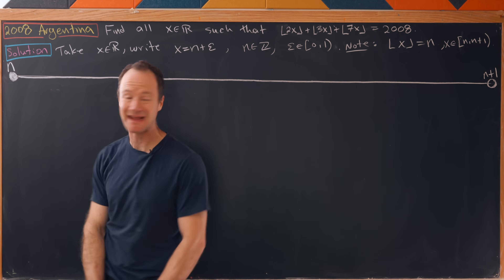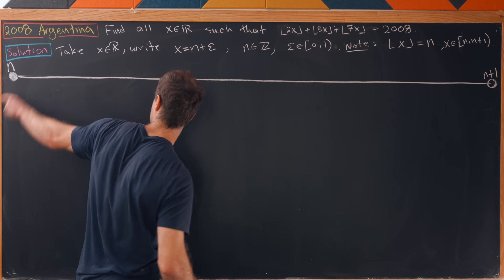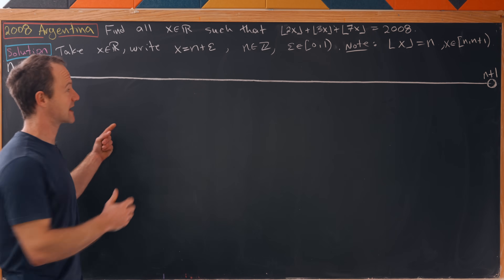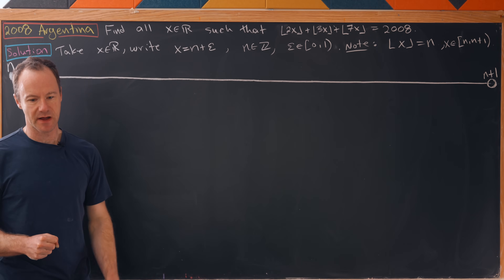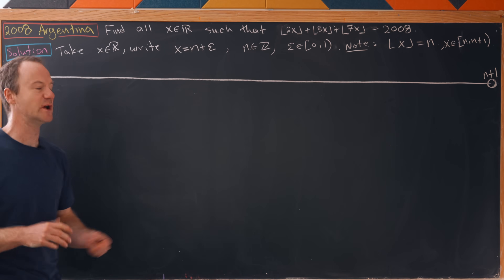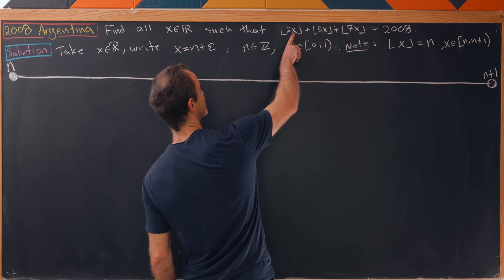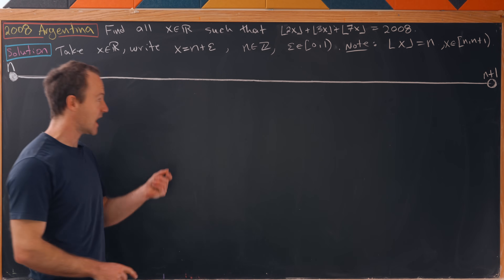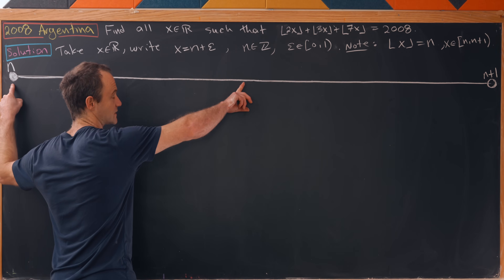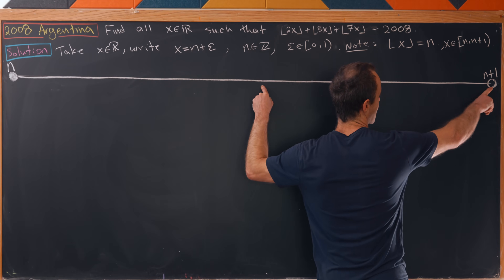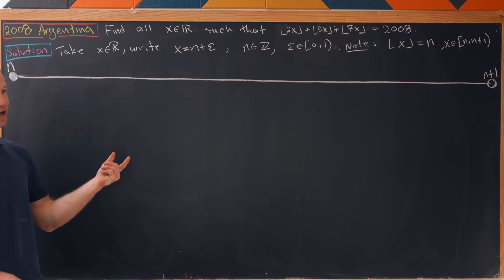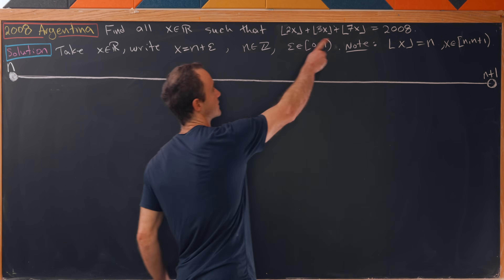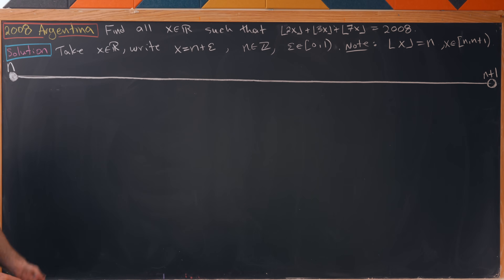We've got our number line starting at n, ending at n plus 1, including n but not n plus 1. We're going to break this number line into pieces inspired by 2x, 3x, and 7x. The floor of 2x will change depending on whether x is between n and n plus one-half, or between n plus one-half and n plus 1, because the factor of 2 ticks it over to a larger integer. We'll also need to break it into one-third pieces and one-seventh pieces.